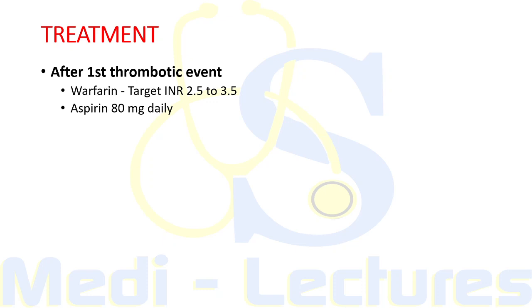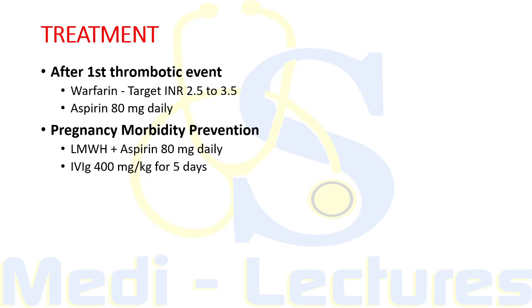Regarding treatment, after the first thrombotic event an APS patient should be placed on warfarin for life, given in a dose to achieve a target INR of 2.5 to 3.5. Along with warfarin, aspirin 80 mg daily can also be added for prevention of thrombotic events.